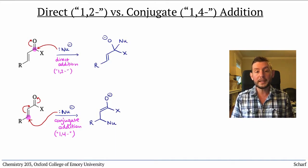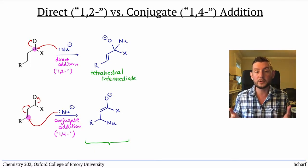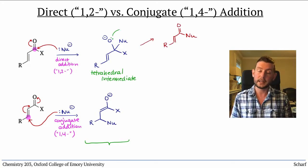In both cases there are negatively charged intermediates. The tetrahedral intermediate from the direct addition does what a familiar tetrahedral intermediate might: either kick out a leaving group if one is present or protonate at O-.